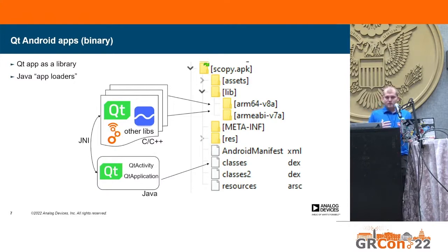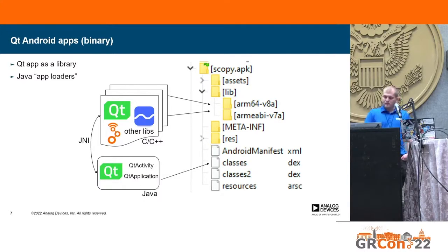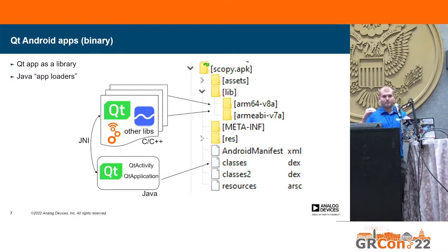There is some interaction between the C++ domain and the Java domain. Sometimes you may want to do something in the Android operating system — create a notification, or the Android OS may request killing your application. This is where the Java Native Interface comes in, which basically eases communication between the C++ and Java space.